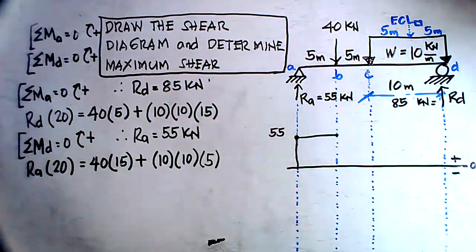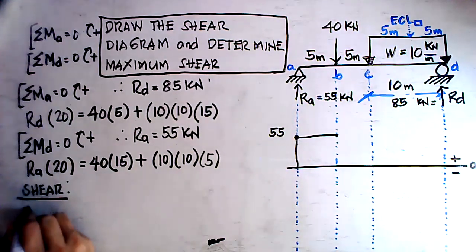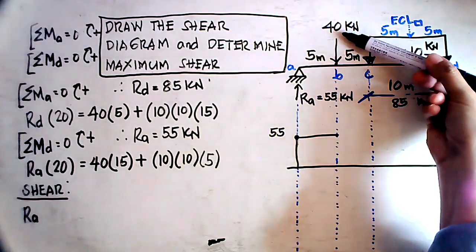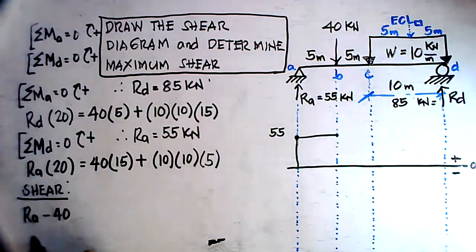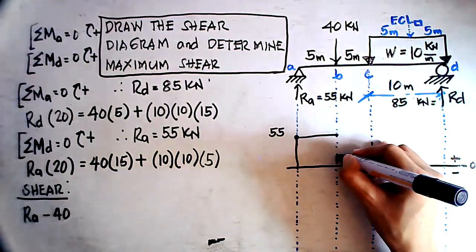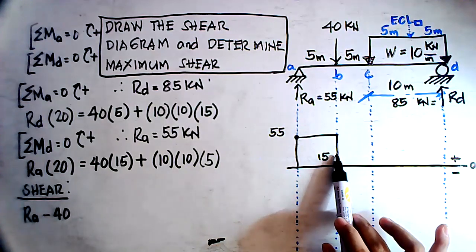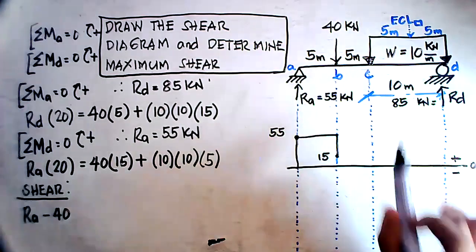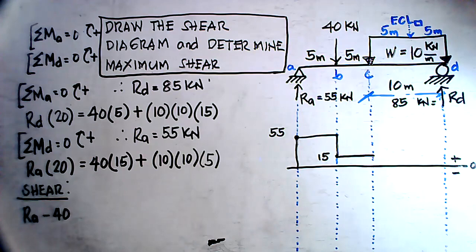The 40 kilonewton load is directed downward, so we subtract it: 55 minus 40 equals 15 kilonewtons. Between points B and C we have no load, so the shear remains constant at 15 kilonewtons. That gives us the horizontal portion of the shear diagram from B to C.